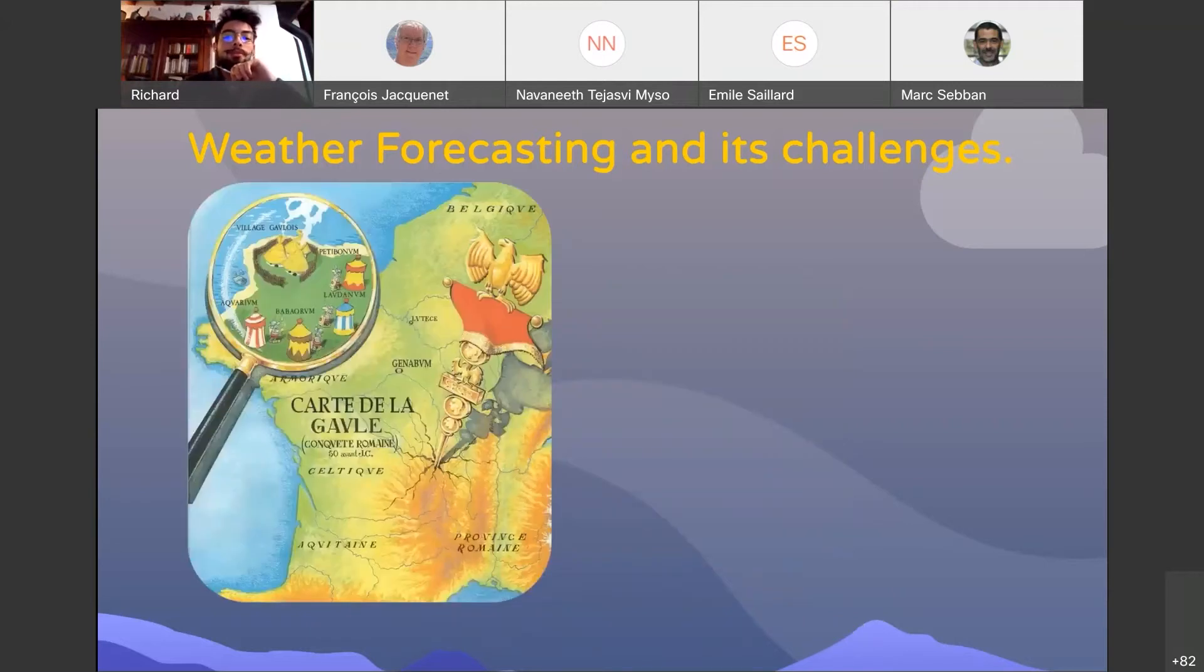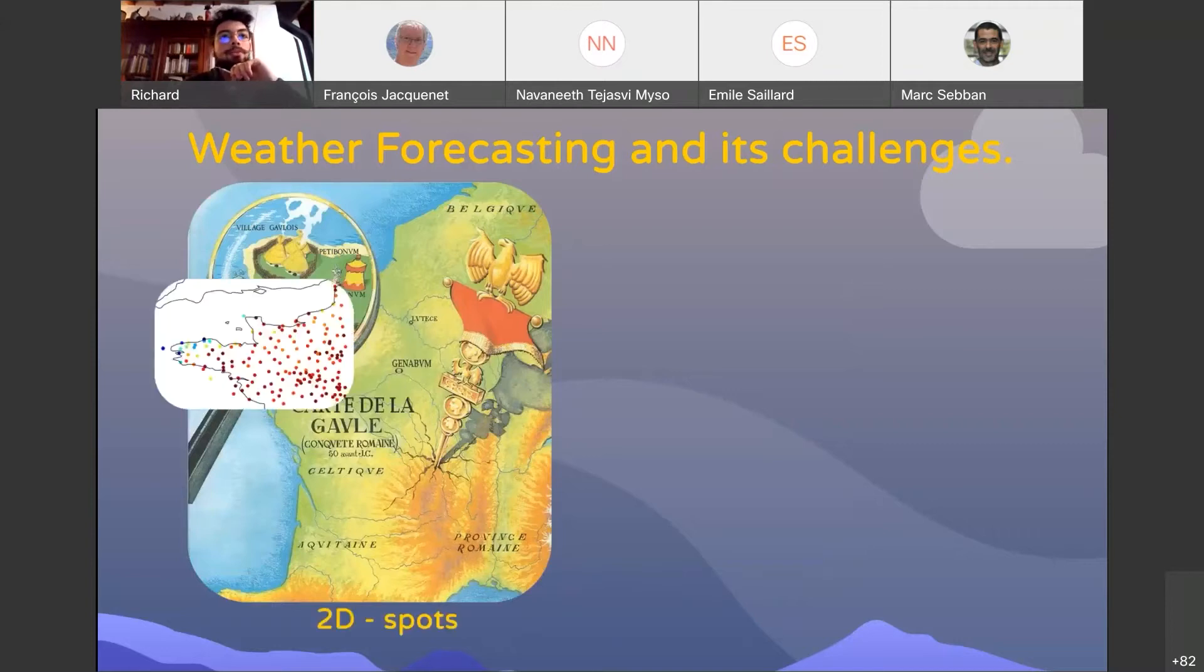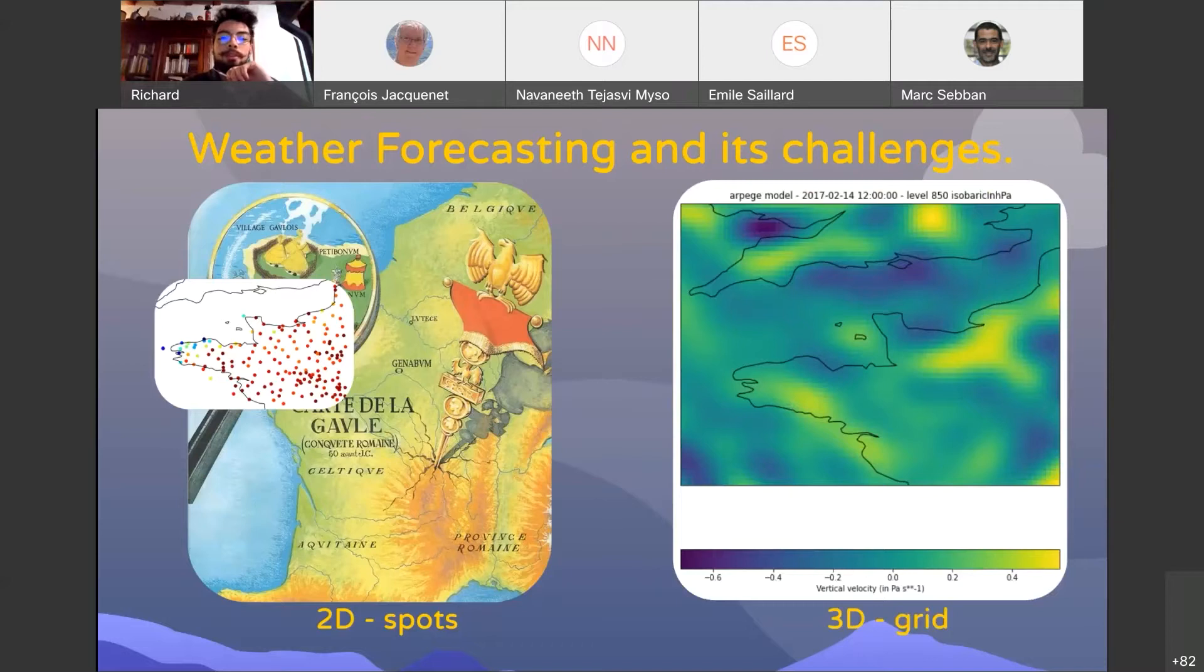What we aim to do is predict the daily rainfall at day D using only the data of day D-1. To do so, we have access to the collected data of the weather stations in Brittany and also of the 3D grid made by the ARPEGE physical model used by Météo-France.